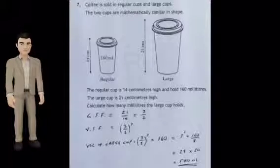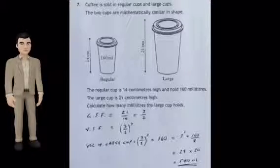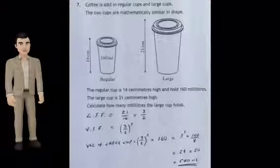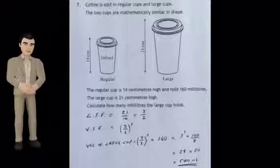The regular cup is 14 centimeters high and holds 160 milliliters. The large cup is 21 centimeters high. Calculate how many milliliters the large cup holds.